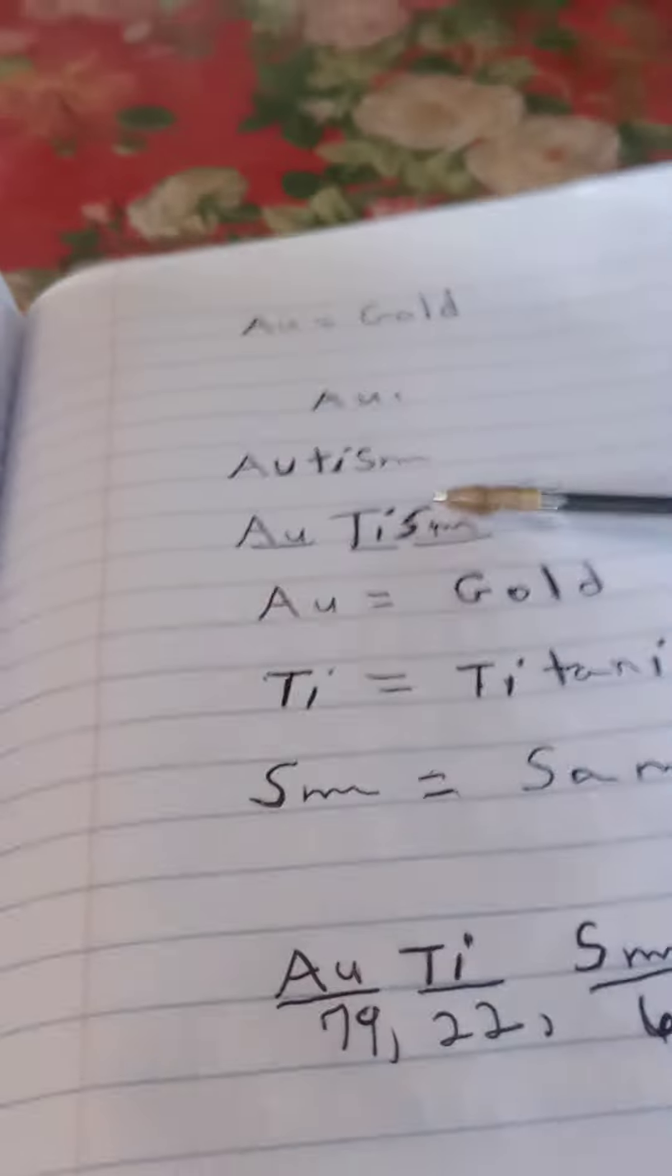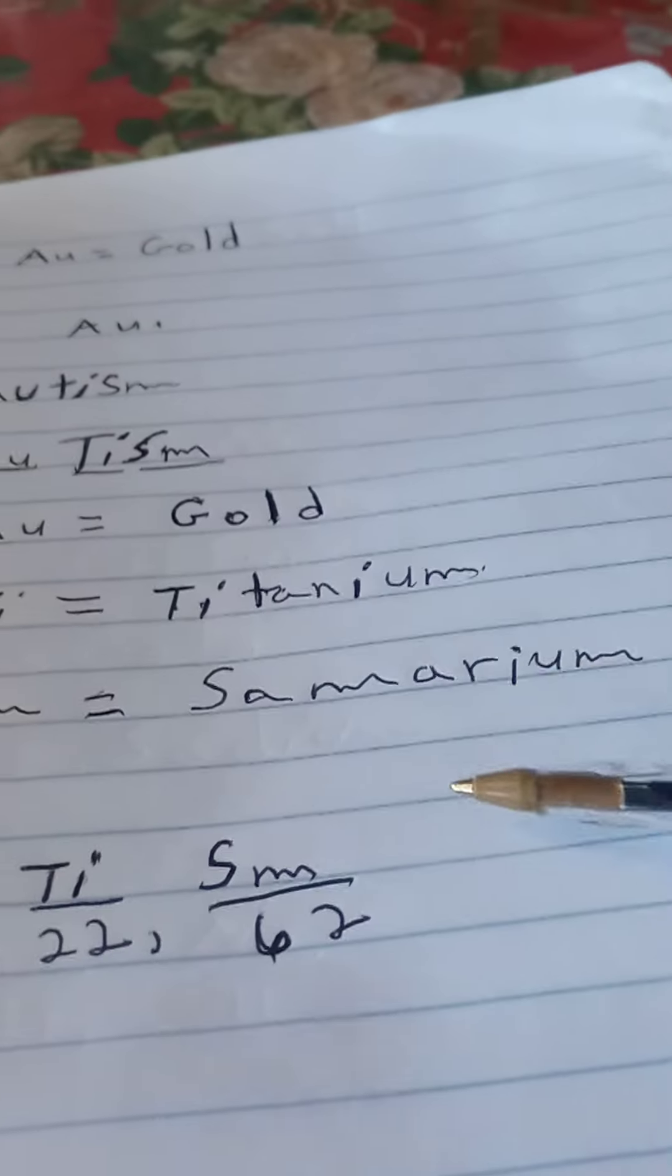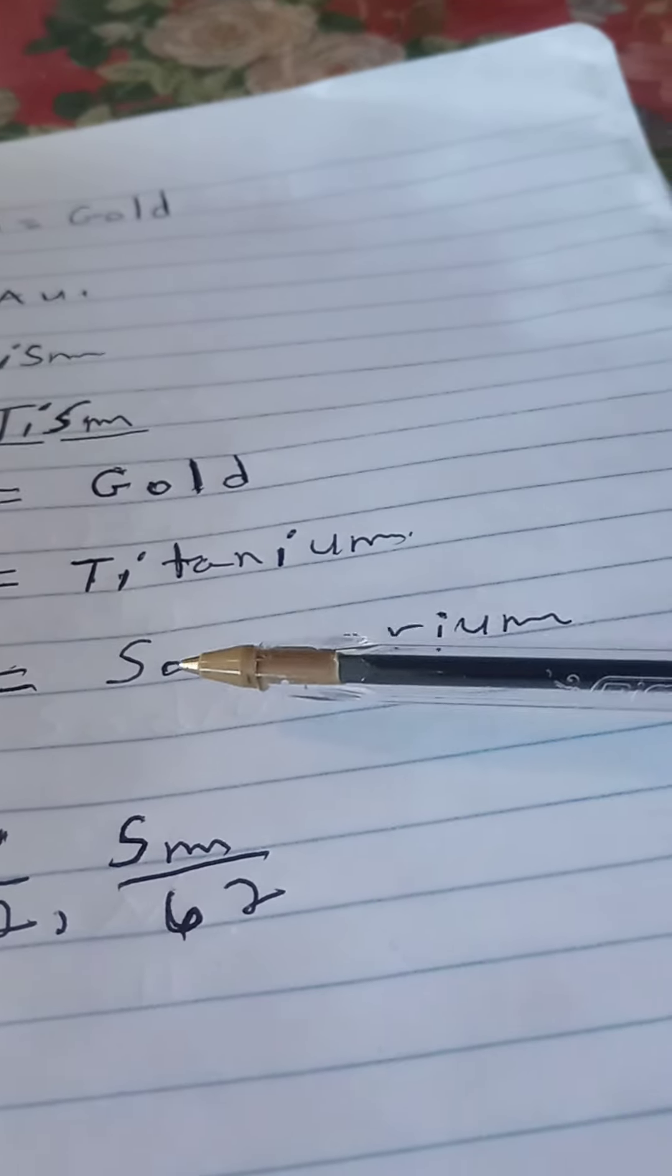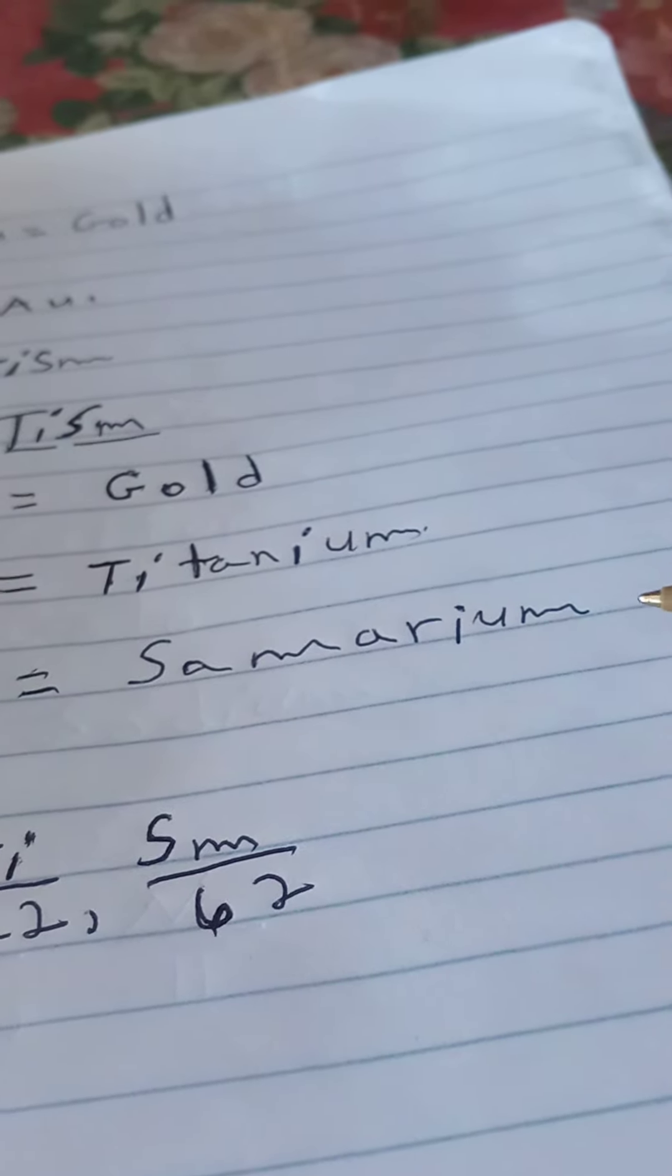And then you got capital S and a small m. And capital S and a small m is for samarium. Capital S-A-M-A-R-I-U-M. Samarium.